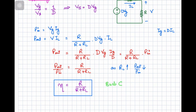The efficiency of the buck converter is given by η = R / (R + RL). From this expression, as the internal resistance RL of the inductor increases, the efficiency decreases. The efficiency is significantly affected by the internal resistance of the inductor. In summary, we have modeled the buck converter using the transformer-based dependent source model and derived the efficiency expression based on the inductor's internal resistance.